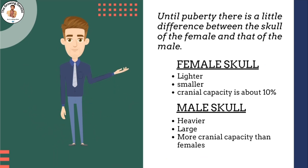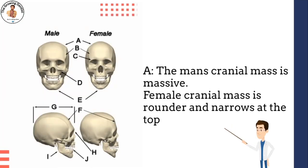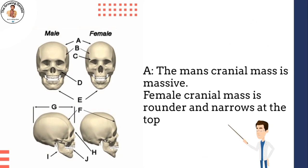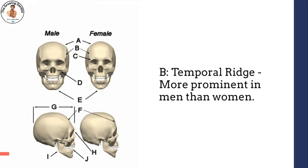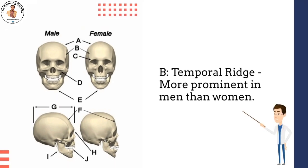The most important skull differences between men and women are indicated by letter values on the figure to the left. A is the cranial mass: in males it is more blocky and massive compared to females, while in females the cranial mass is rounder and tapers, or narrows, at the top. B is the temporal ridge, which runs along the outer side of the upper skull, creating the square shape of the upper head; it is more prominent in males.